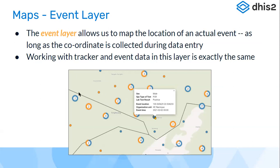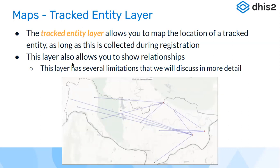The Tracked Entity Layer maps the location of tracked entities using coordinates collected during registration. This layer is also coordinate-dependent — without coordinates captured during enrollment, the layer cannot be used. This layer supports relationships, though it is newly introduced and enhancements are still being made, with additional features in the pipeline.